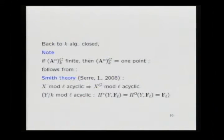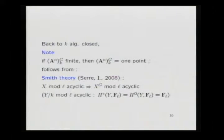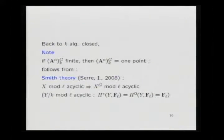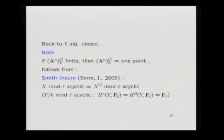Coming back to K algebraically closed, we know there are fixed points. But it turns out that if the number of fixed points is finite, then on the other hand it is only one point. This is rather strange, but it follows from a variant — an algebraic variant of Smith theory — devised by Serre and also independently by myself in 2008. The result is simply: suppose G is a finite L-group, and suppose that X is mod-L acyclic, meaning its cohomology with values in F_L is trivial in higher degree and H^0 is just F_L. Then the same is true for the fixed point set X^G.